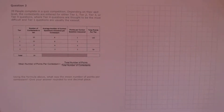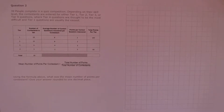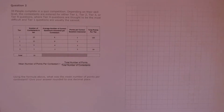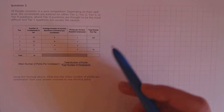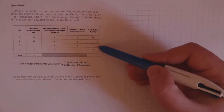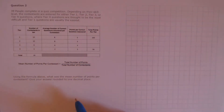Question 2. 39 people compete in a quiz competition. Depending on their skill level, the contestants are entered for either Tier 1, Tier 2, Tier 3, or Tier 4 questions, where Tier 4 questions are the most difficult and Tier 1 questions are the easiest. Using the formula above, what was the mean number of points per contestant? Give your answer rounded to 1 decimal place. Before we can do that, we need to know the total number of points. To calculate that, we need to calculate the values for each tier first and then add them up.